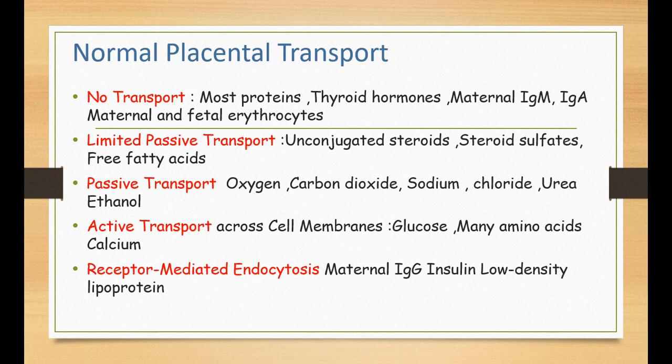Certain materials can be transported passively without energy, from areas of higher to lower concentration. For example, unconjugated free steroids, steroid sulfates, and free fatty acids can be transported but usually in a limited range. True passive transport is free and unlimited, requiring no energy. Substances transported this way include oxygen, CO2, sodium, chloride, urea, and ethanol. CO2 is transported from the fetal to the maternal circulation, and oxygen from the maternal to the fetal circulation.